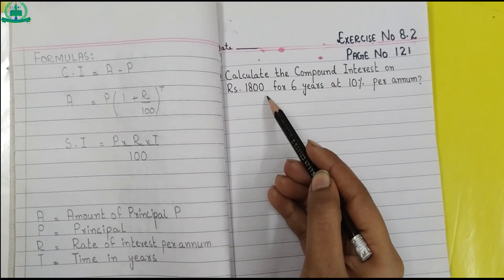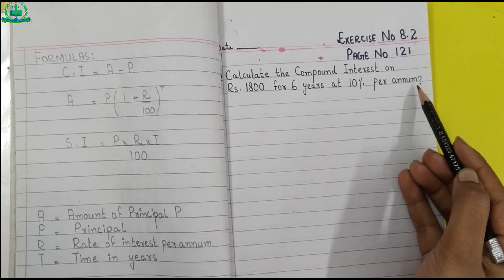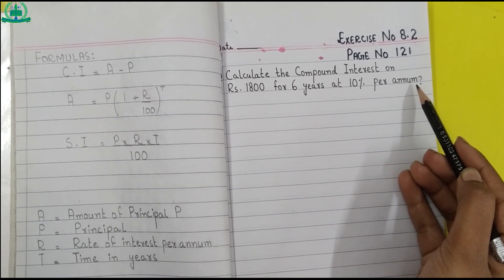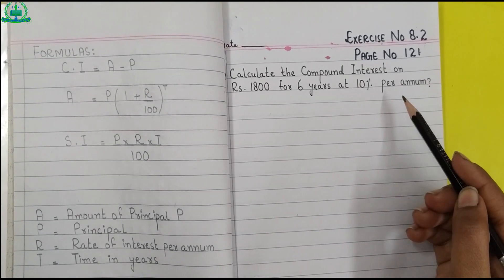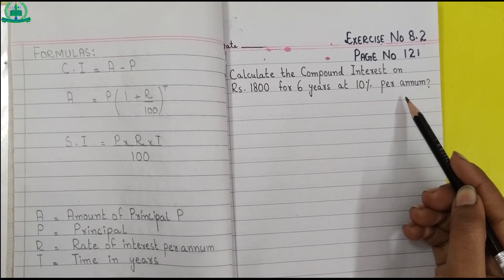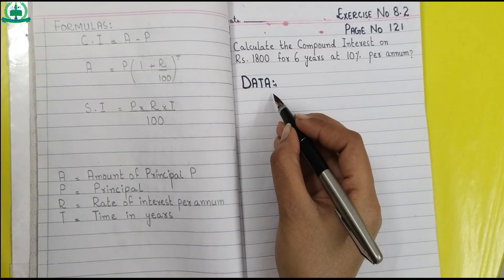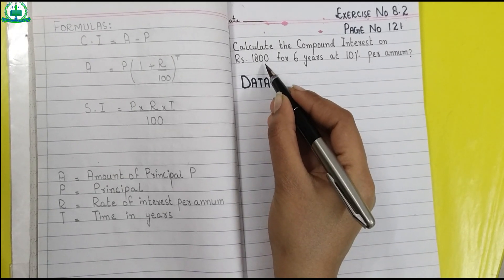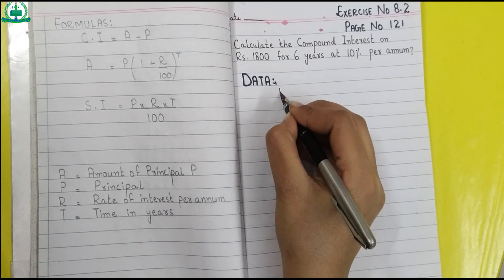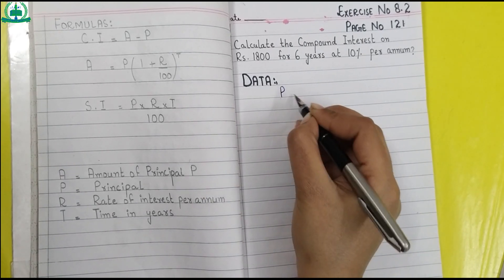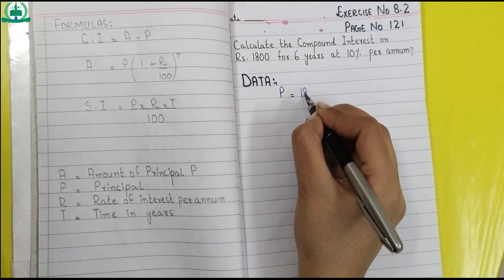Question number one: calculate the compound interest on rupees 1800 for six years at 10 percent per annum. We are going to learn how to find compound interest using the formula. Give heading 'Data'. The principal given in the question is rupees 1800, so we write P equals 1800.